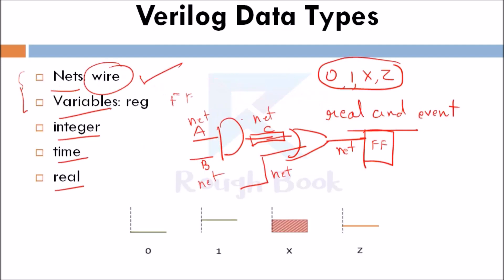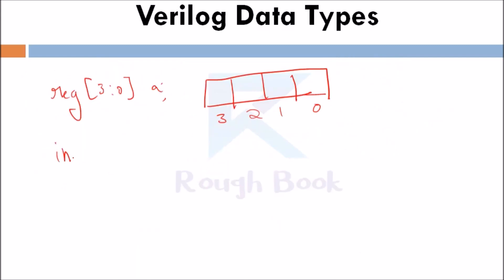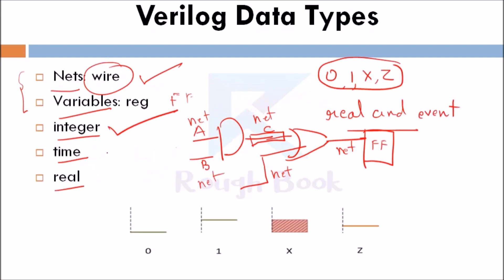Next, we have integer. Integer is a general-purpose variable of 32 bits that can be used for other purposes while modeling hardware and stores integer values. For example, we have integer count. Here count is an integer whose value is greater than 0.